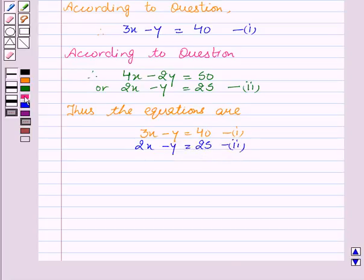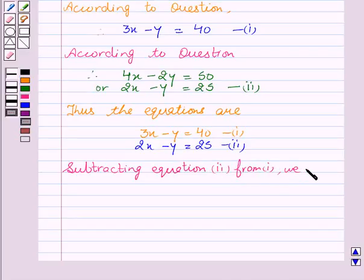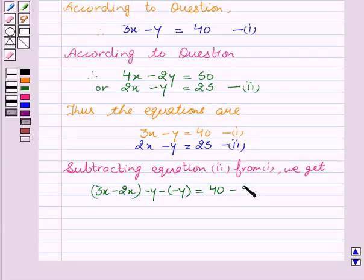Now, on subtracting equation second from first, we get 3X minus 2X minus Y minus negative Y equal to 40 minus 25. This implies X minus Y plus Y equal to 15. This implies Y cancels out, X equal to 15.